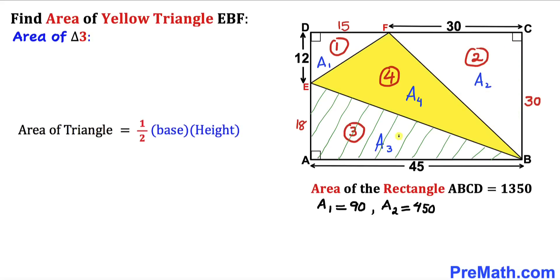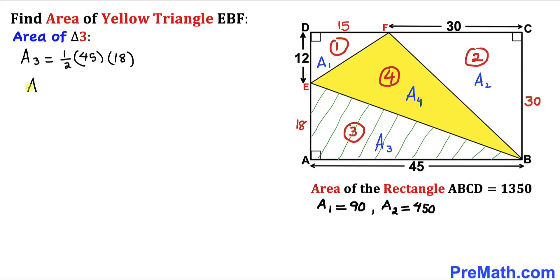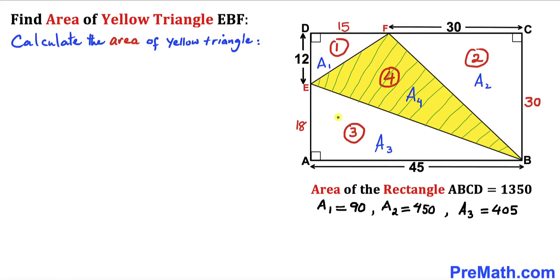Now let's focus on triangle 3 and find its area. A sub 3 equals one-half times base times height. In this case the base is 45 and the height is 18 units. Simplifying the right-hand side, A sub 3 turns out to be 405 square units.